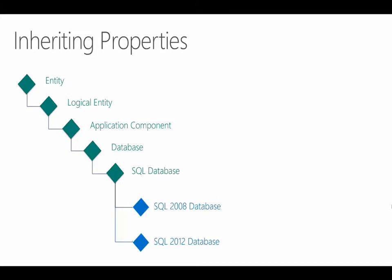The SQL 2008 and 2012 database classes are shown in a different color because they're concrete classes, while the others are abstract — we'll cover that concept shortly. The reason we have a different class for different versions is so we can manage them separately. Each version of SQL has its own MP, and the SQL database class is defined in a common SQL library MP that the others reference. Because they both inherit from the same SQL database class, we can target a state view at that class that will include databases from all versions of SQL.